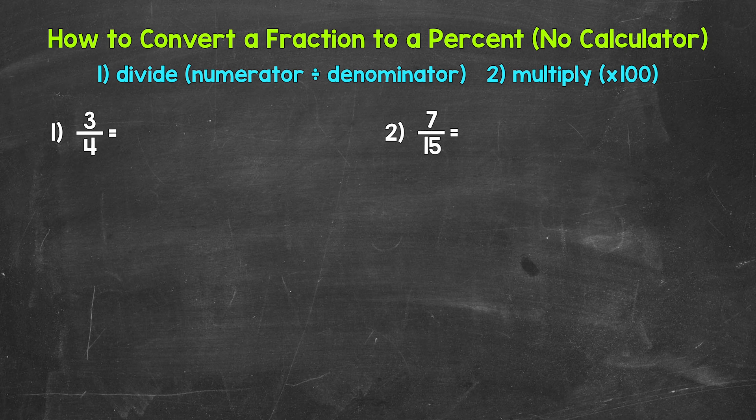Let's jump into our examples, starting with number 1 where we have 3 fourths. We need to start by dividing the numerator by the denominator — 3 divided by 4. So let's come down here and set this up. So 3 divided by 4.